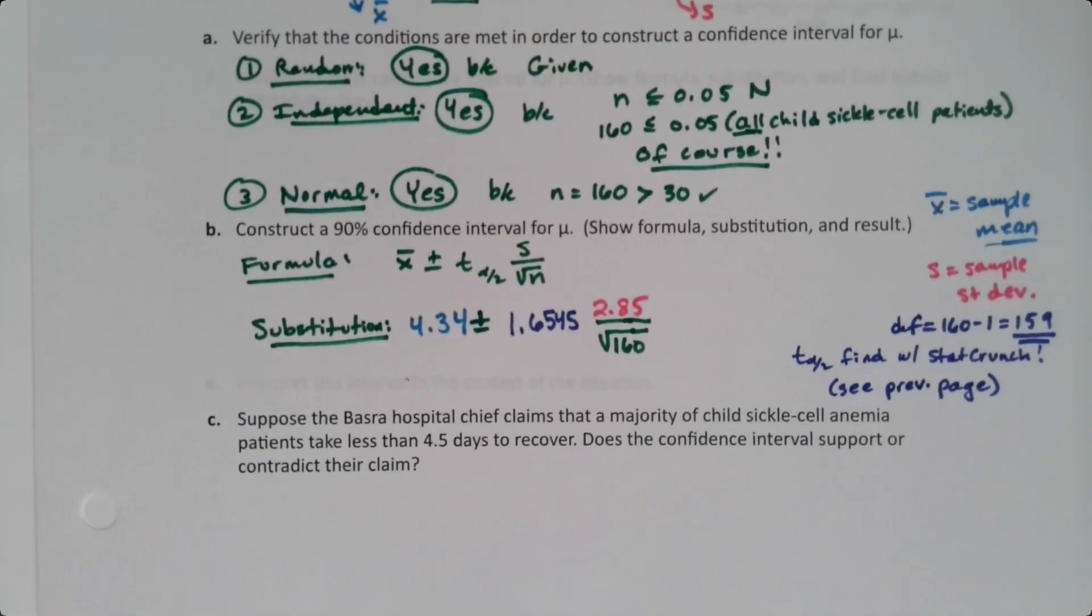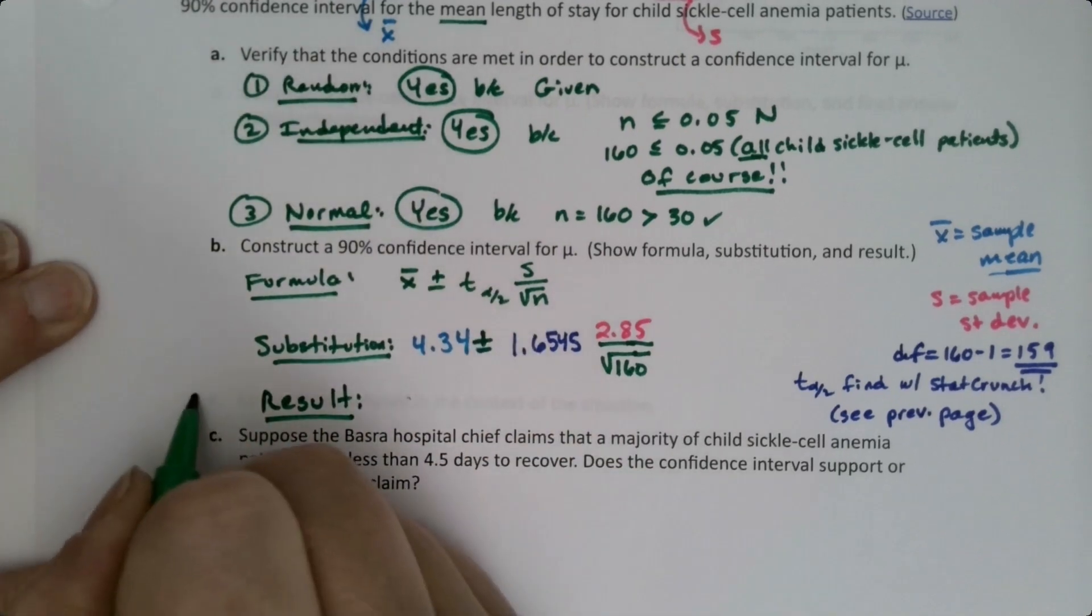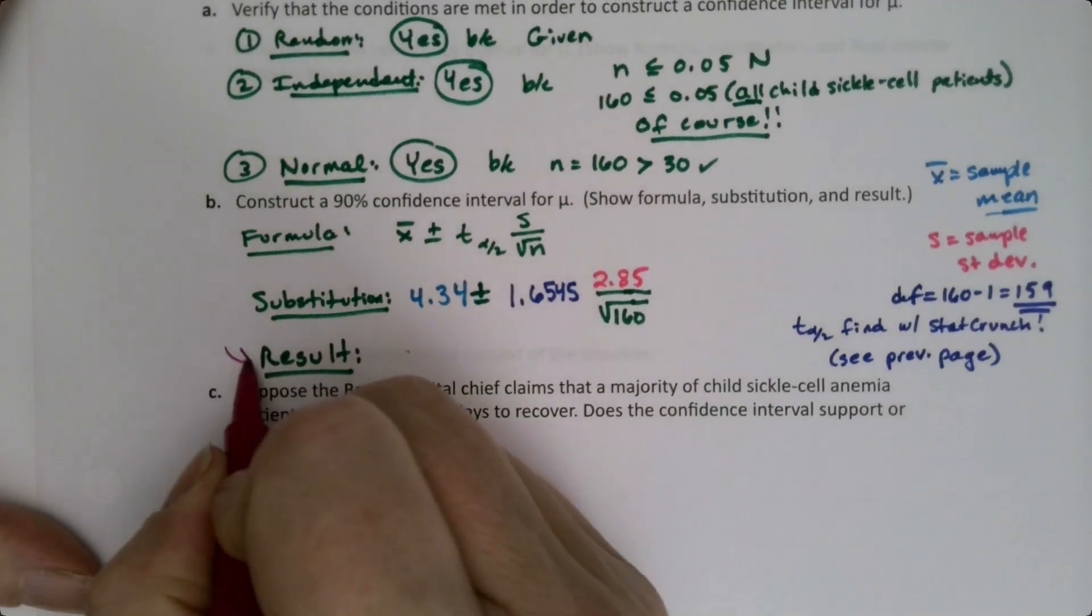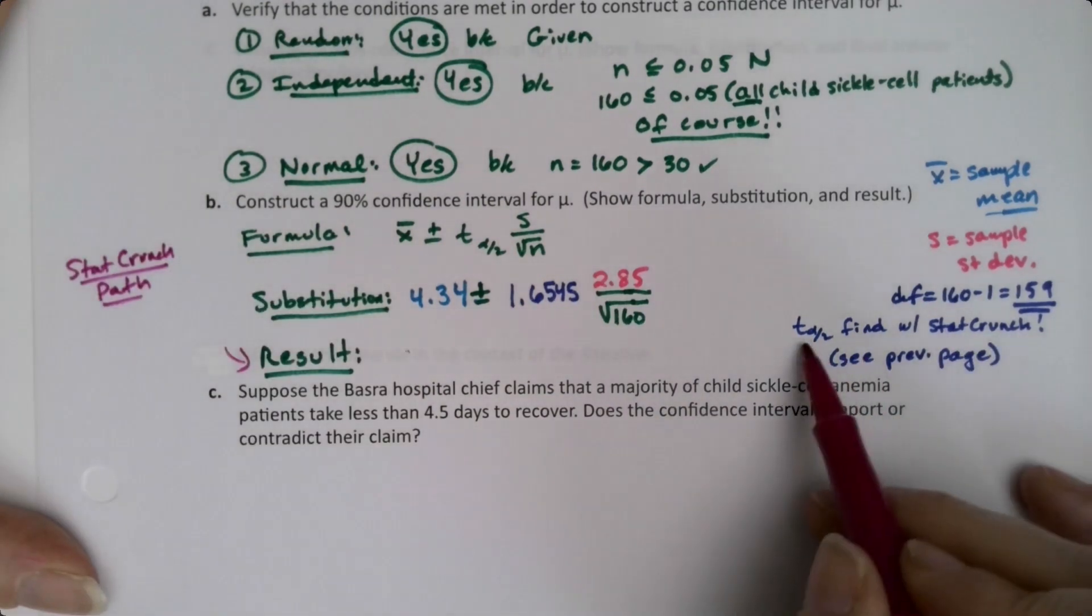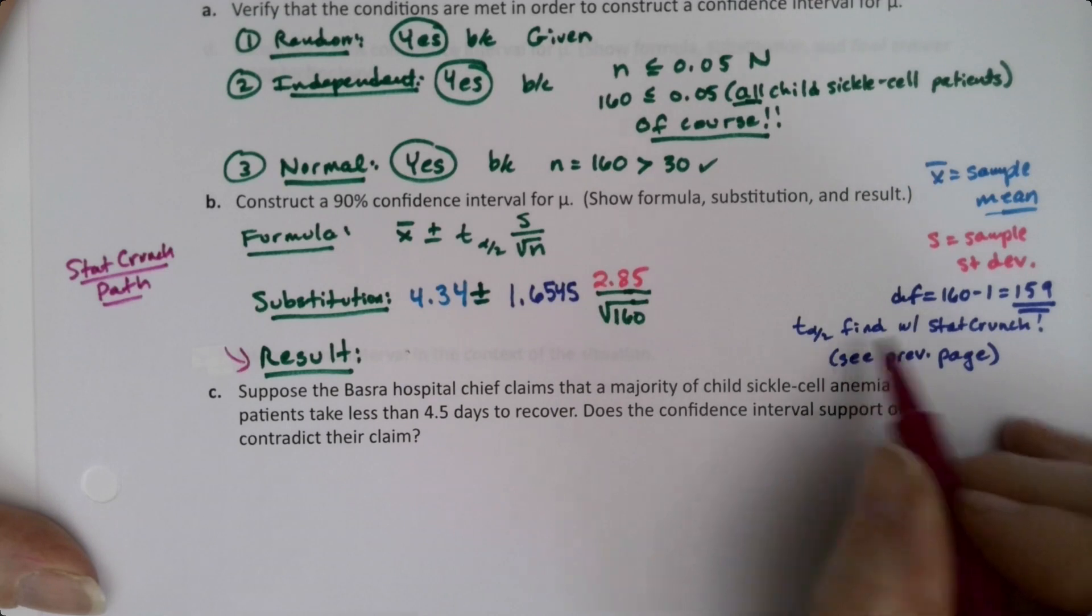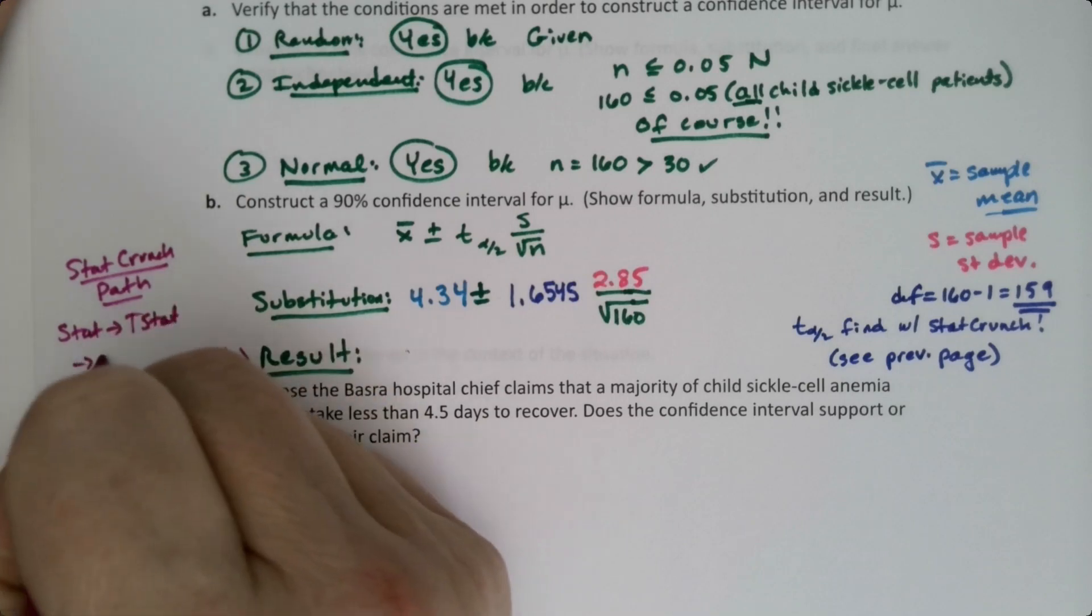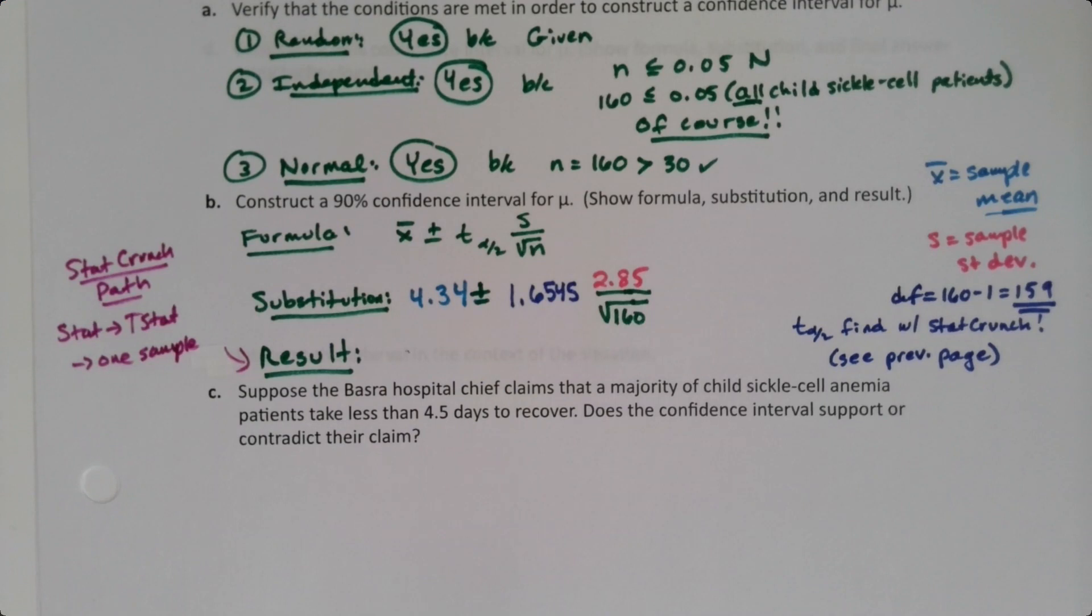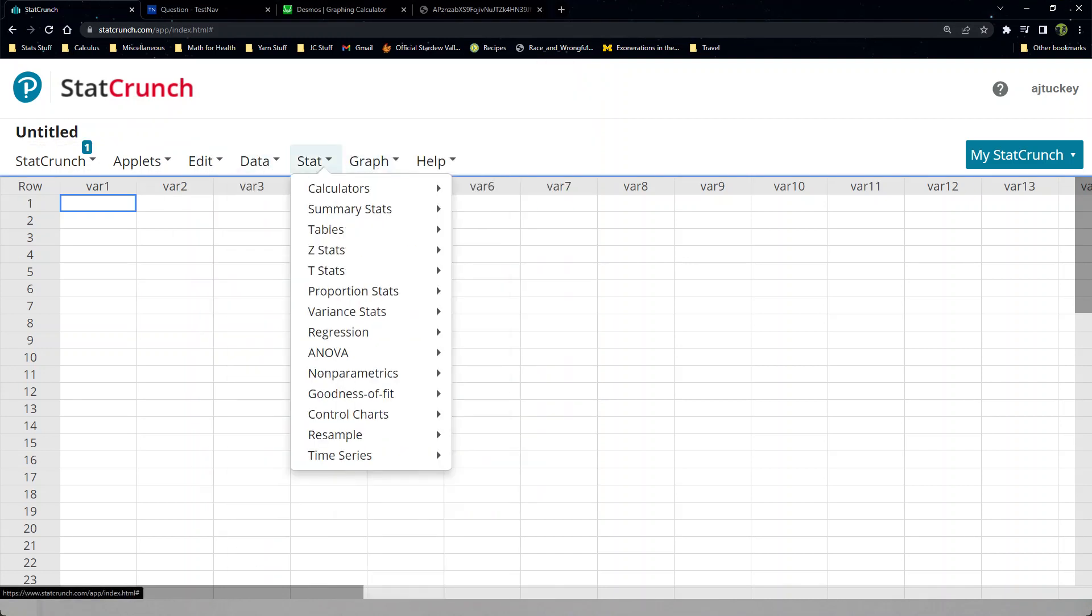Now you could go type all that in, it's fine, but we can just find the result with StatCrunch. I'm going to write my path. Hold on, let me write my StatCrunch path. So we actually have to use StatCrunch twice. We use it once to find the t, right? That's with the t. Stat calculators t. And then we find the result with Stat, tStat, one sample. And then we have to choose either with data or with summary. So if I look at this particular problem, I don't have the data, right? So I can't use data, I'm going to have to use with summary. So Stat, tStat, one sample, with summary on this one.